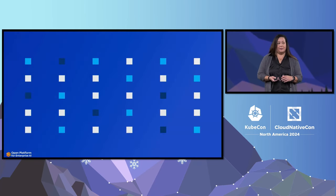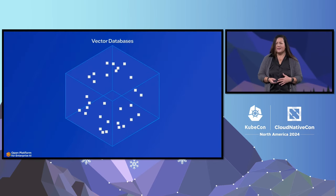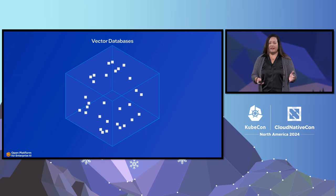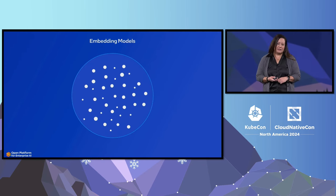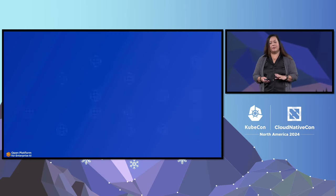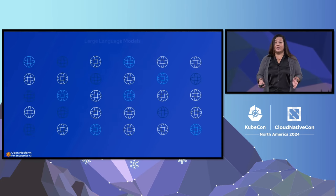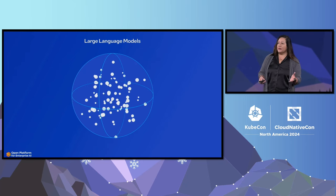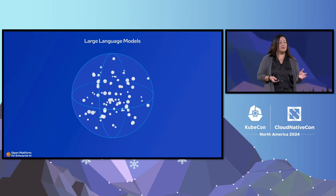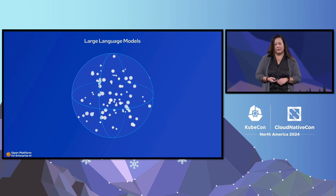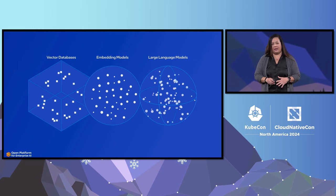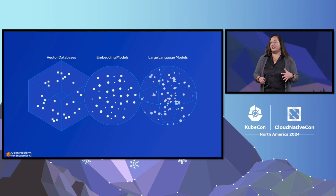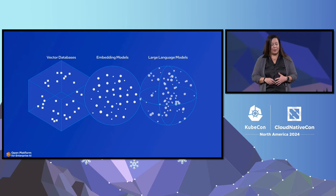If you set out to build a chat service with RAG like this, you're probably going to be overwhelmed. There are dozens of vector databases out there — Redis, Milvus, Chroma. You would need to choose between a variety of embedding models, which are responsible for converting those texts into numbers. And lastly, you need to choose an LLM and decide between a closed model such as OpenAI, or perhaps an open source model you could run locally, like Mistral or Falcon. The options are overwhelming.